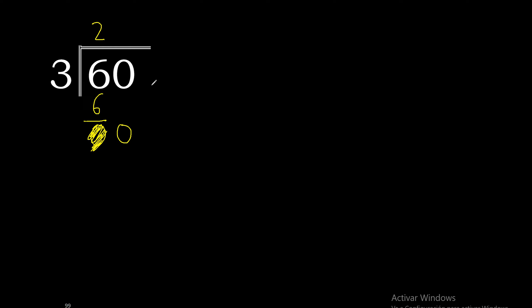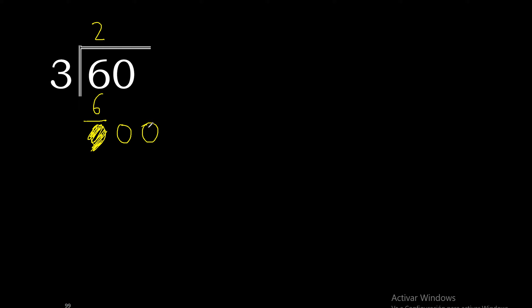Therefore complete — there is no number that goes down, therefore complete with 0. Finish with the number that descended, therefore complete here with 0. So 6d divided by 3 is 2.